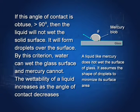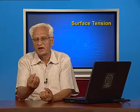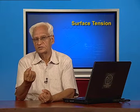Soaps and detergents are made to have small contact angles so that they can spread over soiled surfaces of clothes. What happens to mercury? If it falls on a glass plate, it will break up into small spherical drops.